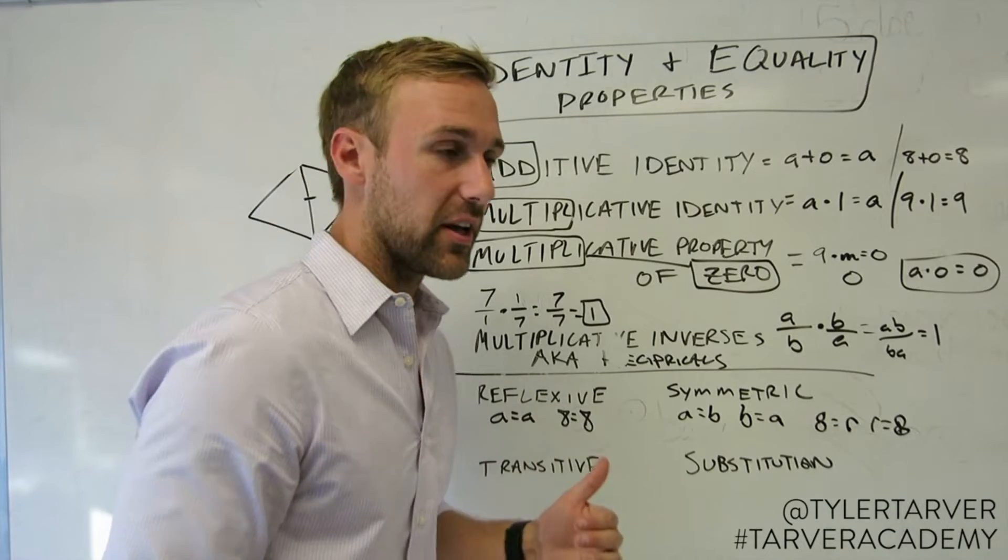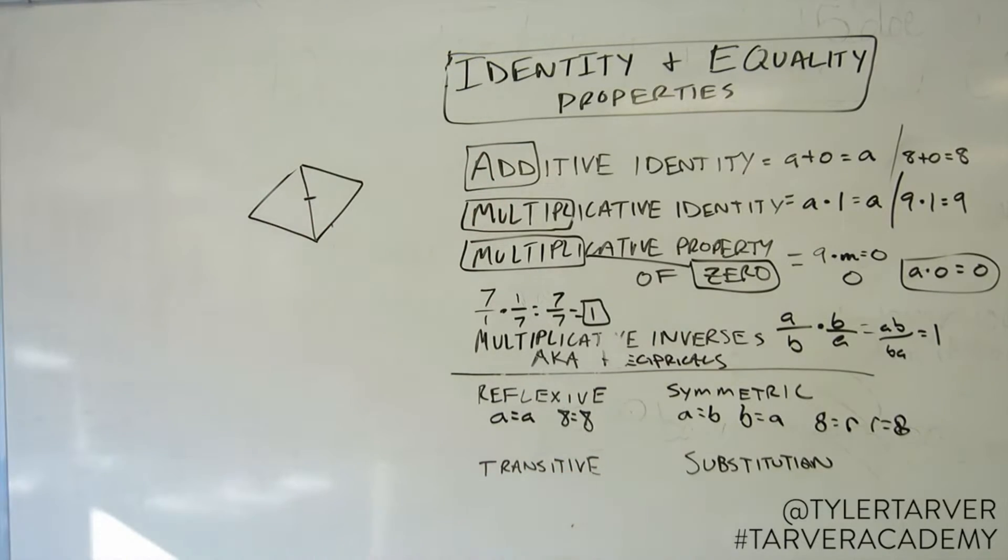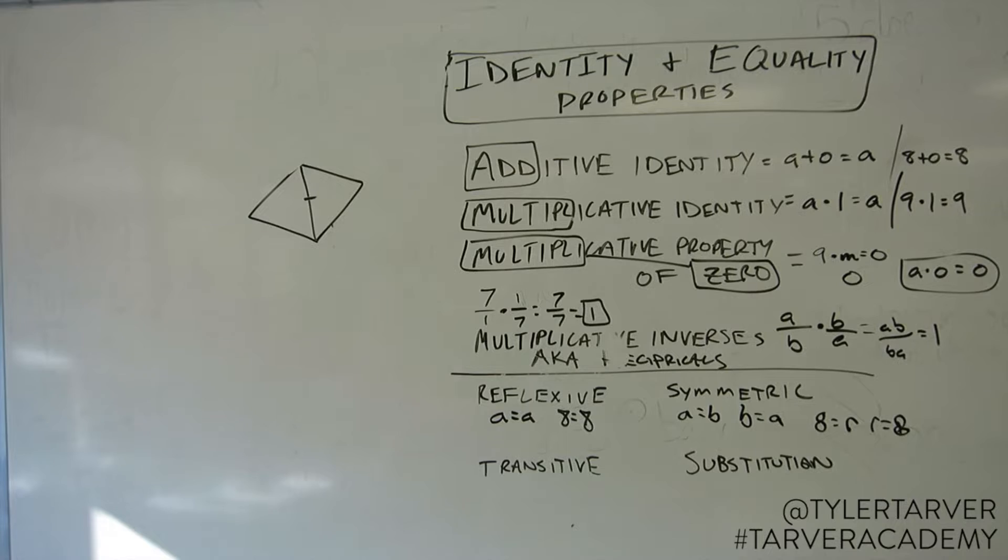This is what I like to call the middleman property. What this does is the transitive property cuts out the middleman.